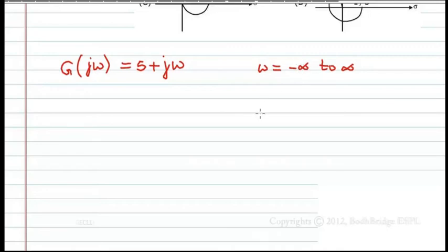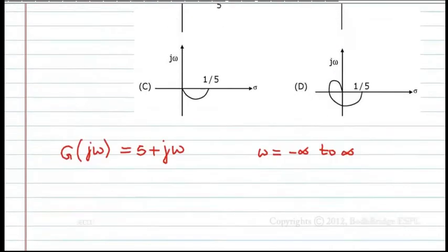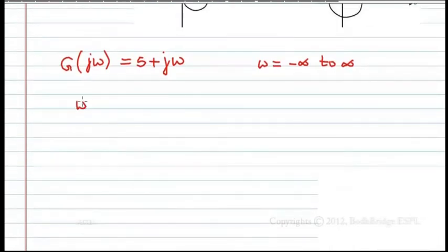Whatever be the omega, for all the omegas it gives this path. This is Nyquist plot. But here he is asking the Nyquist plot only for positive frequencies. Only for omega equal to 0 to infinity is what we need.